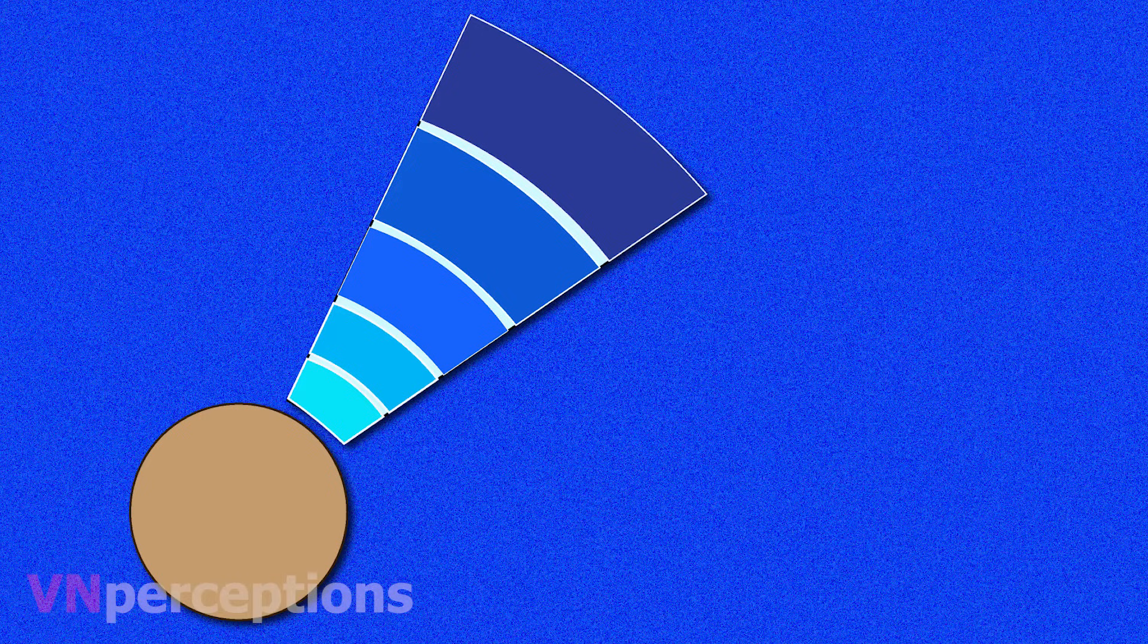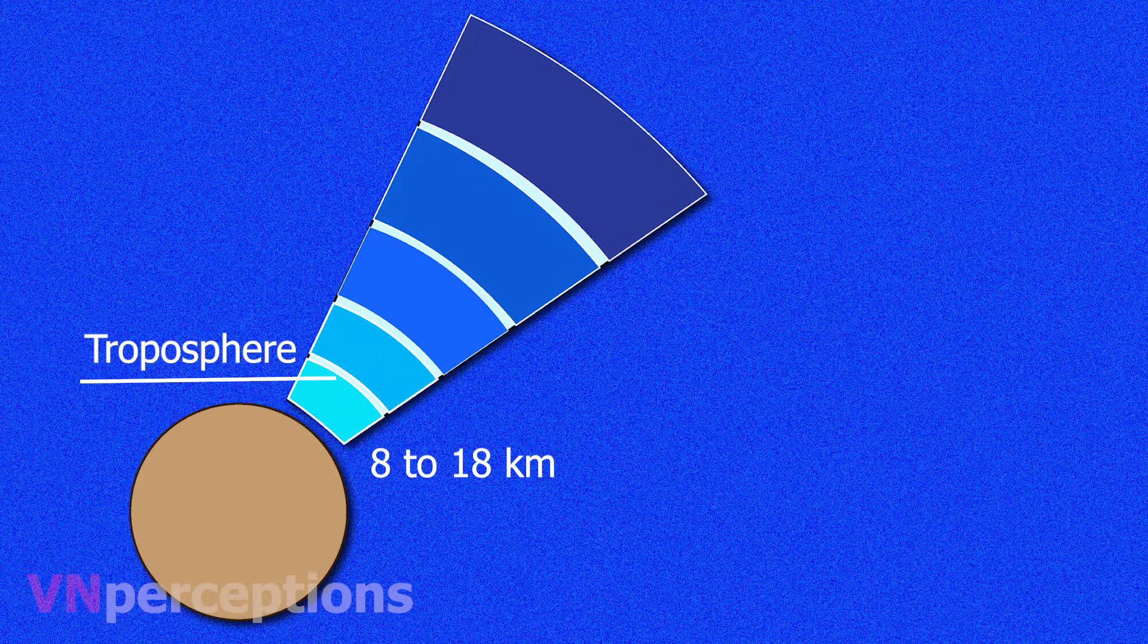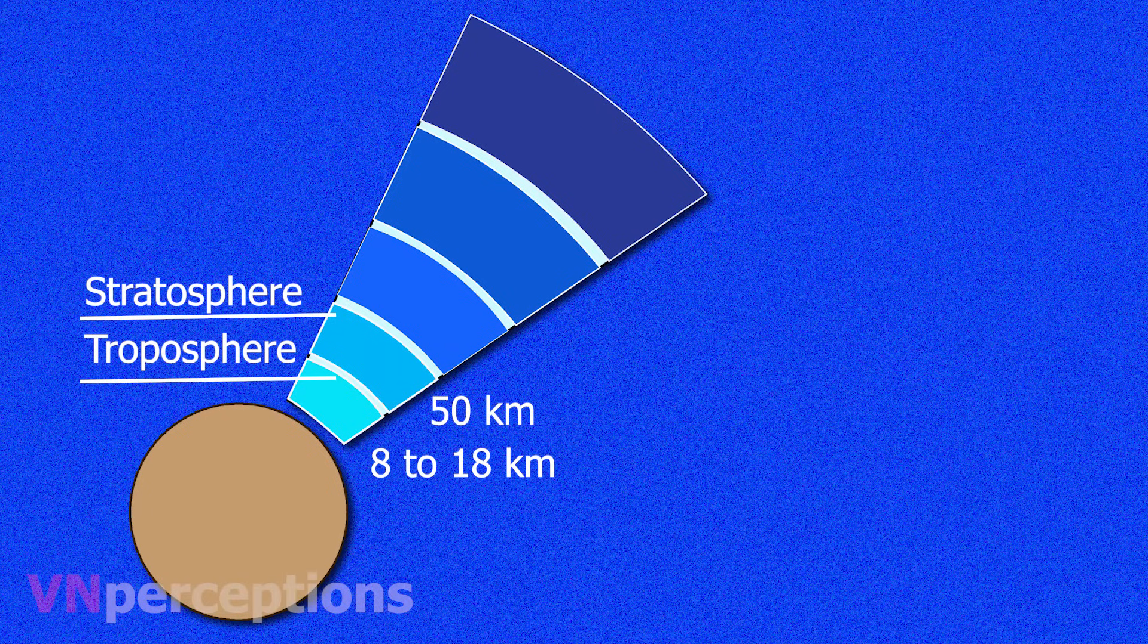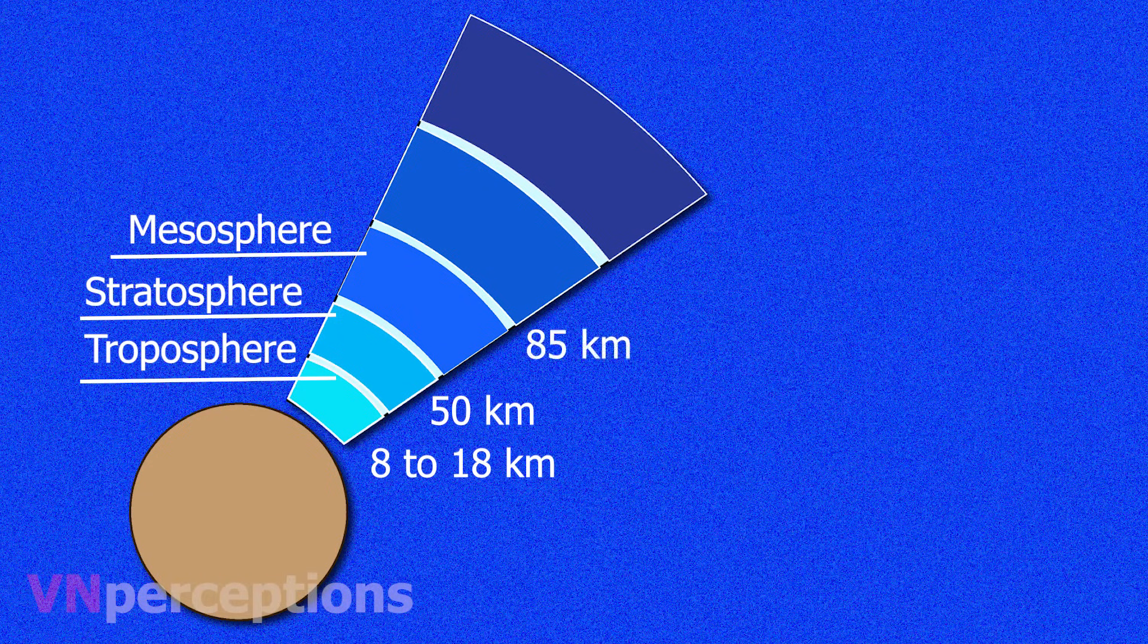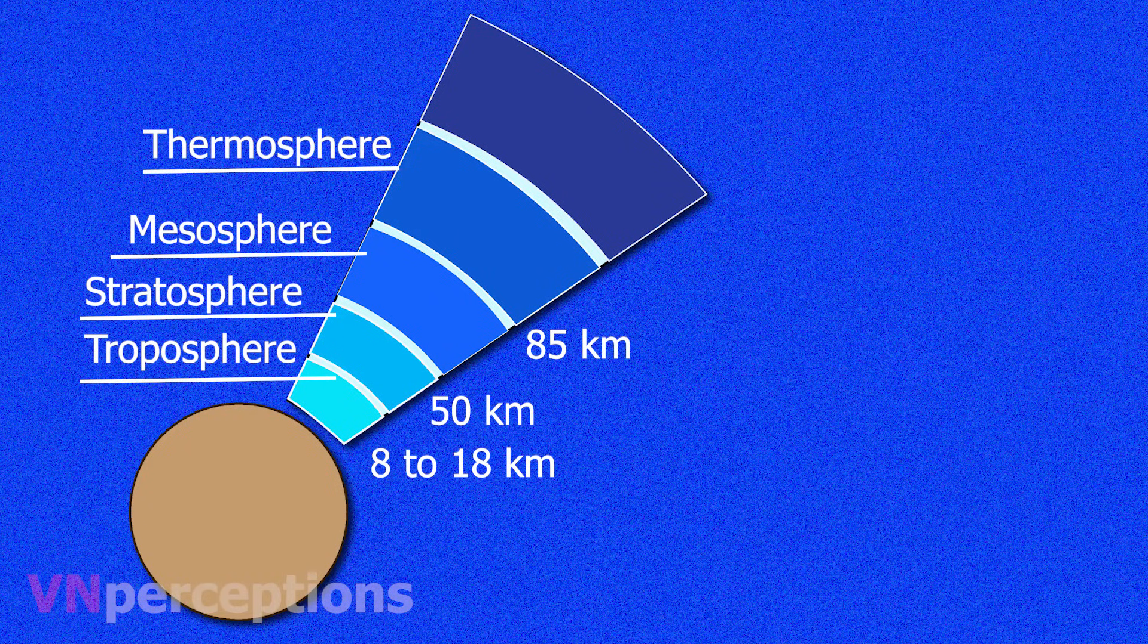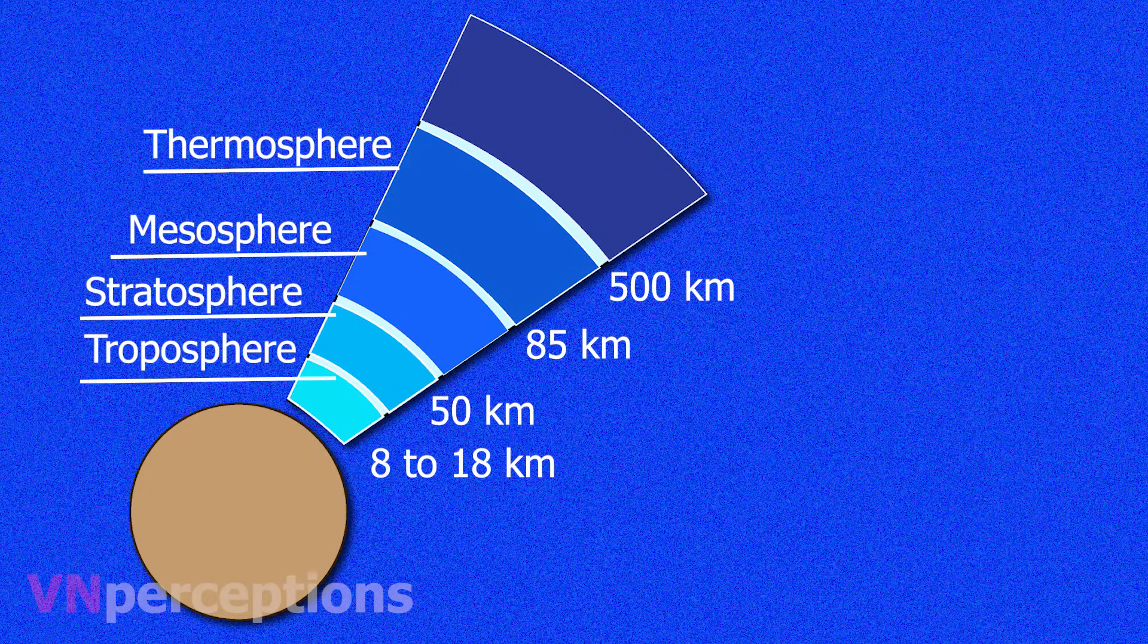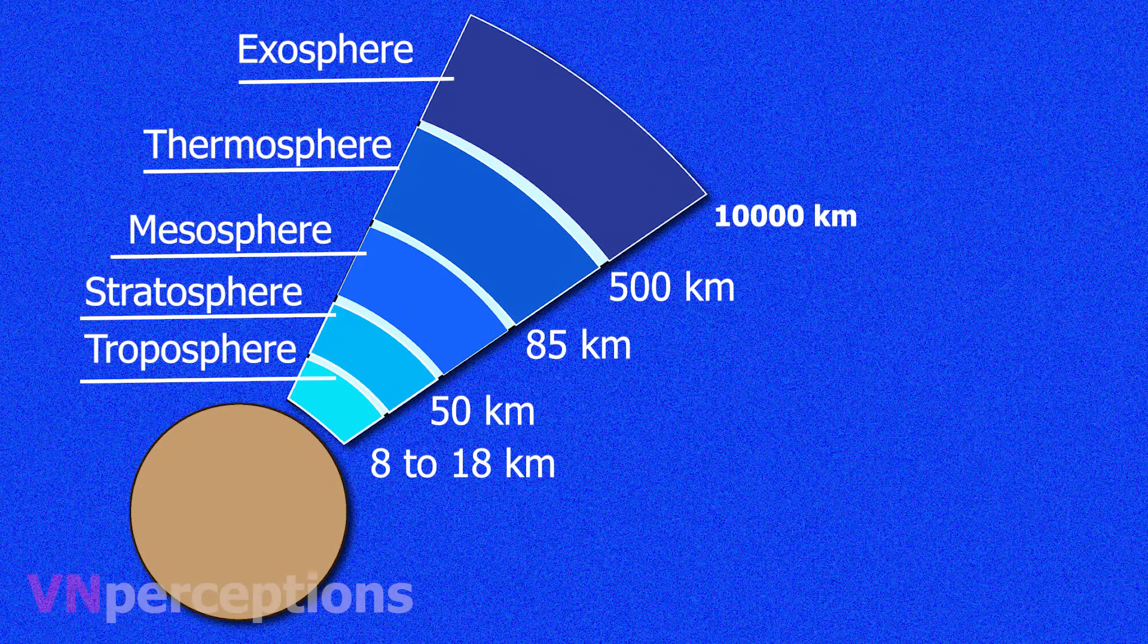They are: first one is troposphere which extends up to 8 to 18 kilometers. Then it is stratosphere up to 50 kilometers. Then it is mesosphere, which extends from about 50 to 85 kilometers above our planet. Then comes the thermosphere that lies between 85 kilometers to 500 kilometers. Then comes the exosphere that lies between 500 to 10,000 kilometers.